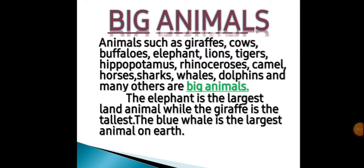We are starting from big animals. Animals such as giraffes, cows, buffaloes, elephant, lions, tigers, hippopotamus, rhinoceroses, camel, horses, sharks, whales, dolphins and many others are big animals. The elephant is the largest land animal, while the giraffe is the tallest. Yeh jo poori word mein largest animal hai, woh elephant hai, aur sab se lumba animal giraffe hai.